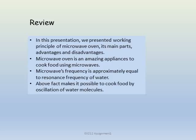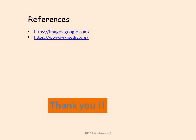In this presentation, we presented the working principle of a microwave oven, its main parts, advantages, and disadvantages. It is an amazing appliance to cook food using microwaves. The fact that microwave frequency is approximately equal to the resonance frequency of water makes it possible to cook food by oscillation of water molecules. All the above data and images were collected from Google and Wikipedia. Thank you.